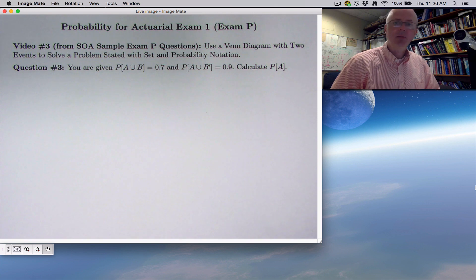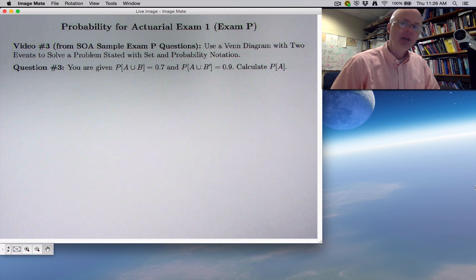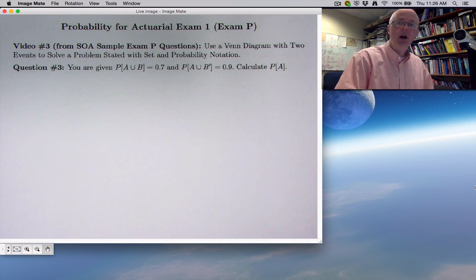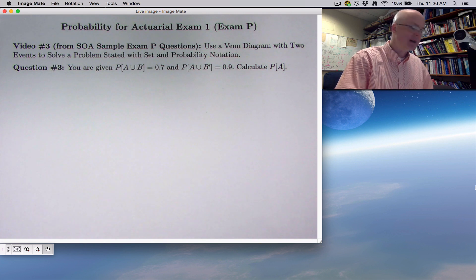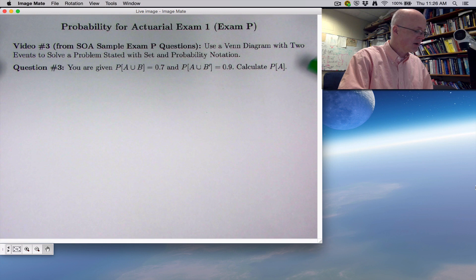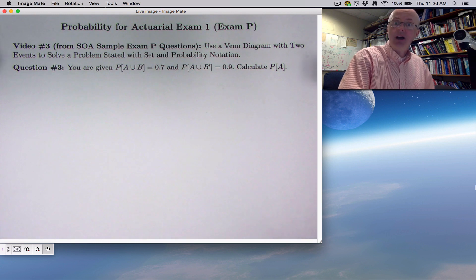Welcome to video number three on probability for actuarial exam one, also called exam P, P standing for probability. You can see in this video we're building off what we did in the first two videos where we used Venn diagrams to help us solve a problem that continues in this video. However, look at the question itself. It's not applied. A purely abstract, symbolic question.